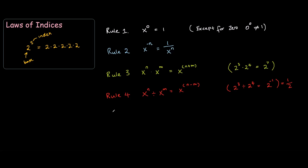So we've got two more rules. Rule 5. If you have x to the power of n inside a bracket raised to the power of m, it would be the same as x to the n times m. So what this is basically saying is if you have 2 to the power of 3 and you raise that to the power of 4, this would be the same as 2 to the power of 3 times 4, which is 12. And again you can verify this in your calculator.